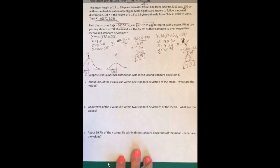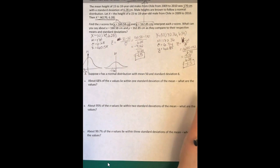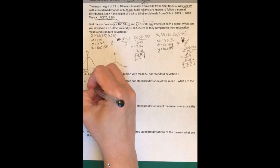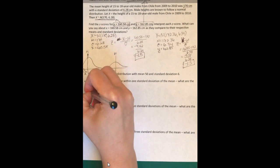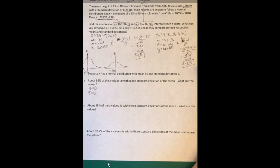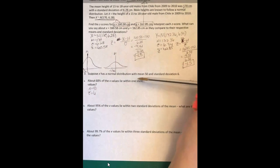Let's quickly go over number three. Suppose X has a normal distribution with a mean of 50 and a standard deviation of 6. The mean is 50, standard deviation is 6. In this case, it says about 68% of the X values lie within one standard deviation of the mean. What are the values? We've got to figure out what one standard deviation of the mean is.